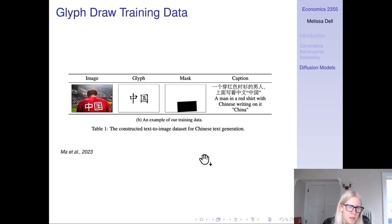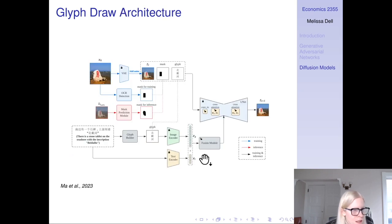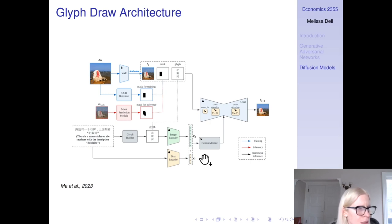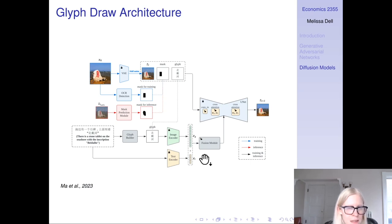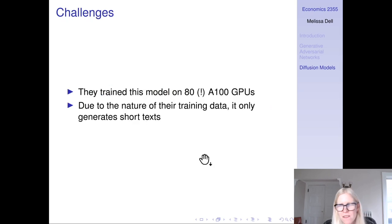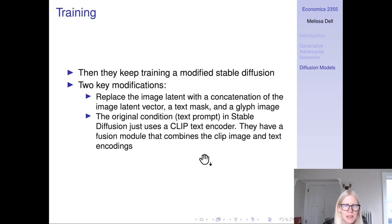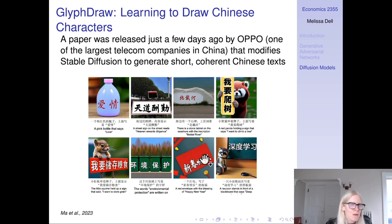The training data for this second step has an image with a glyph in it; they predict a mask for where that glyph is, and then they have the caption. The architecture is sort of stable diffusion, but instead of just having the text encoder, they concatenate that with the CLIP image encoder, locking those CLIP text and image encoders, and for the input they concatenate these three things. The challenge is this was trained on a lot of compute — kind of OpenAI levels — and due to the nature of the training data it only generates short texts. It's impressive how it does this, but not necessarily something you'd use to create synthetic training data for an OCR system. The handwriting transformer is still kind of the way to go for that.